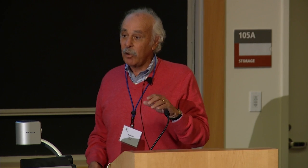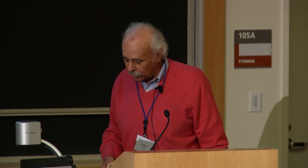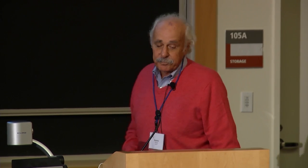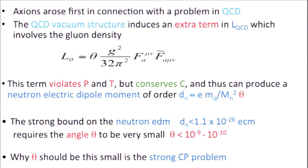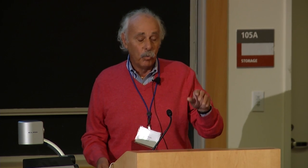Because Stuart was interested in fundamental physics, this is a very good story to talk about. The axion was to first appear in connection to a problem in QCD. Because of the vacuum state of QCD being so complex, there's an extra term in the Lagrangian of QCD which violates P and T but conserves C, and therefore it can produce a neutron electric dipole moment. You can calculate that this neutron dipole moment is proportional to the parameter theta. Because there's such a strong bound on the neutron electric dipole moment, it requires this angle theta to be very small — something like 10 to the minus 10 — and that's unnatural.